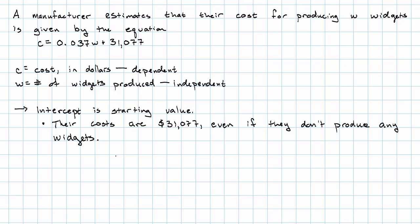They're things you have to pay for even if you aren't getting anything done. And then the slope is the rate of change. So every time we produce one more widget, our cost increases by 0.037 dollars. That's the cost per widget. It might be nicer to give that in cents. That might be a little bit easier to read than 0.037 dollars.